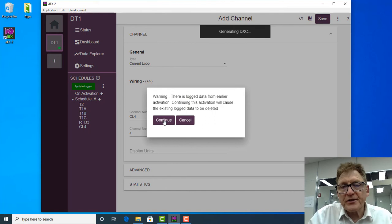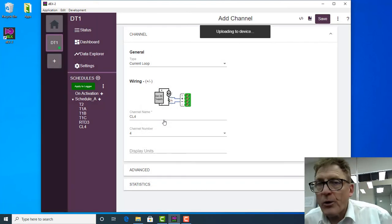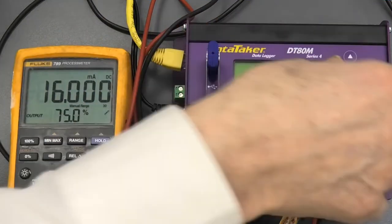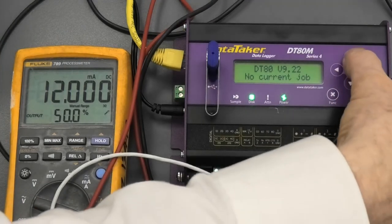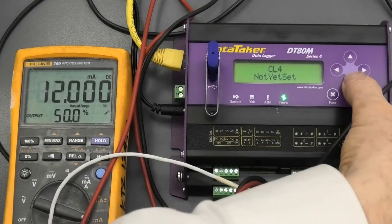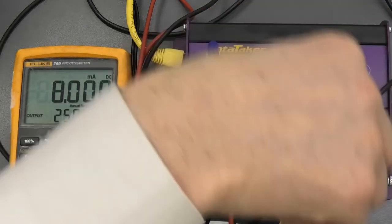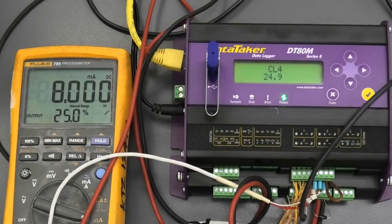And it warns us that there's data already in the logger, it's going to be wiped out. And when we come across here and have a look at the logger, we can scroll up to CL4, we're just waiting for that to go, there it is.